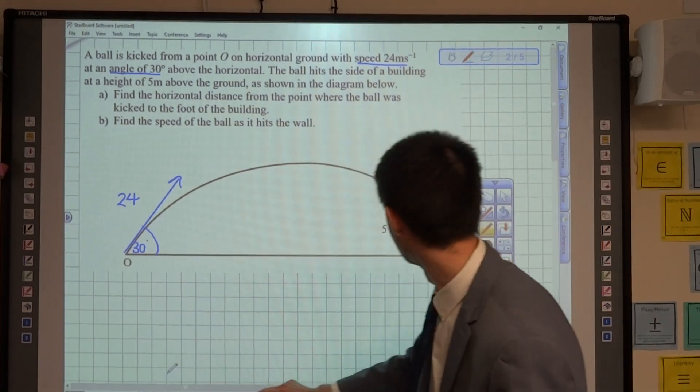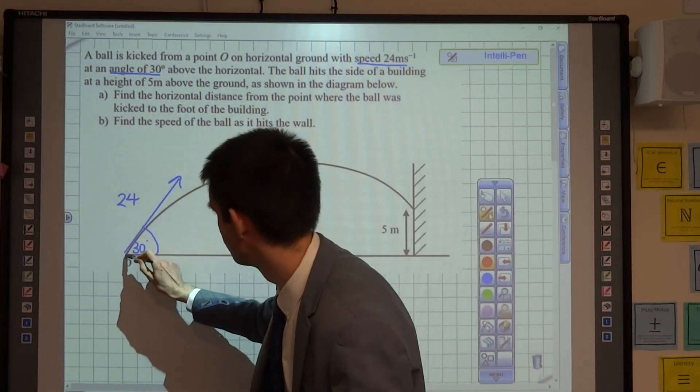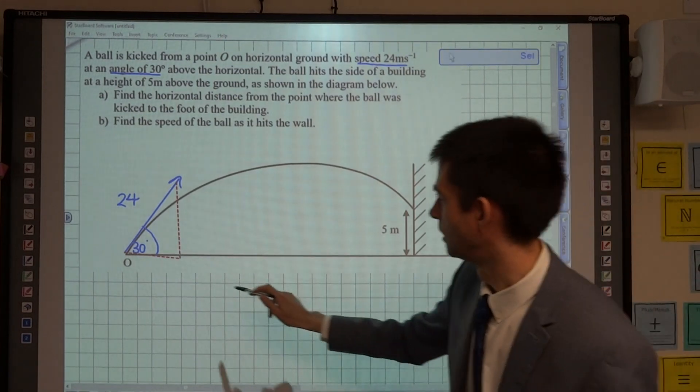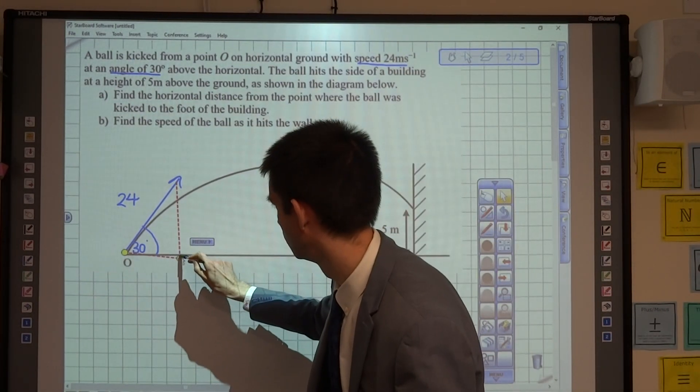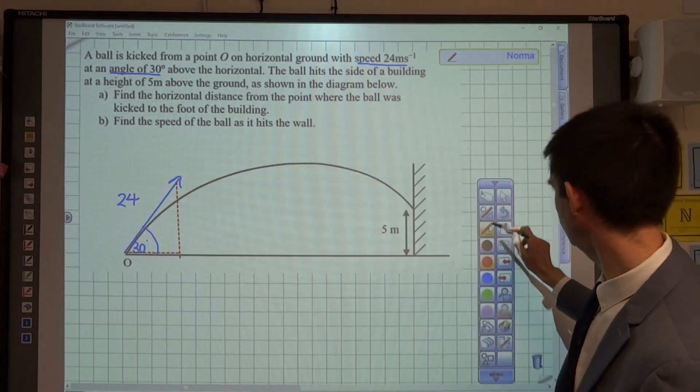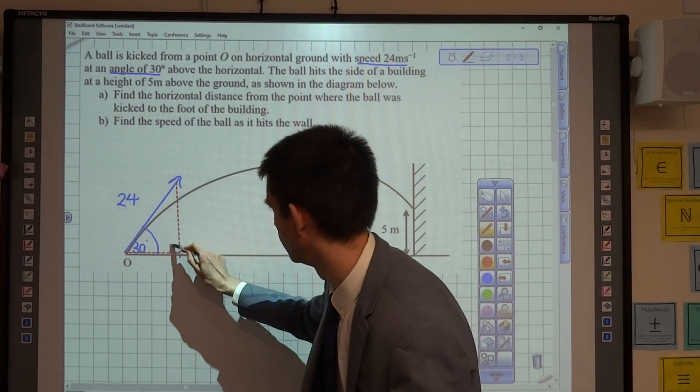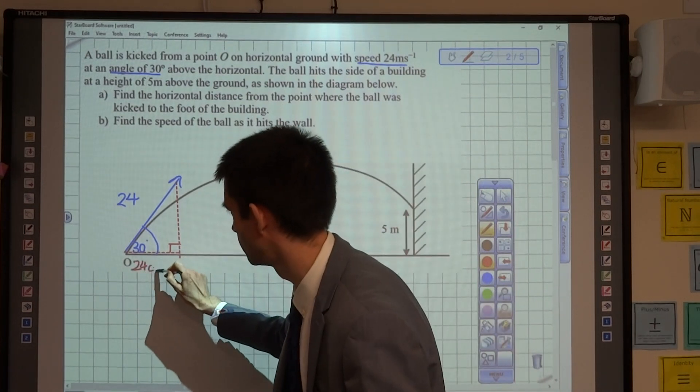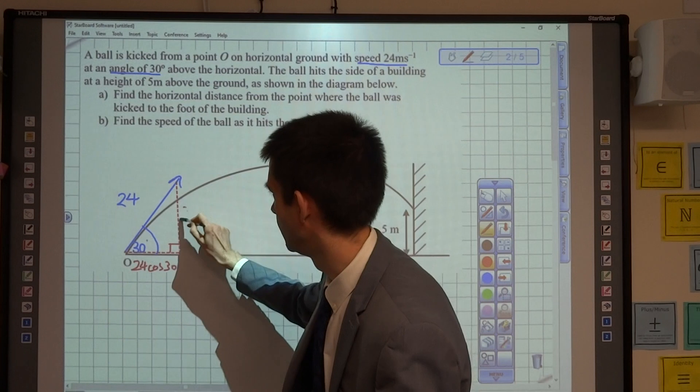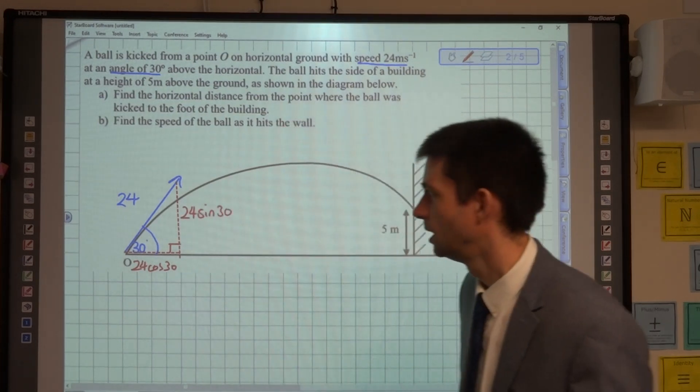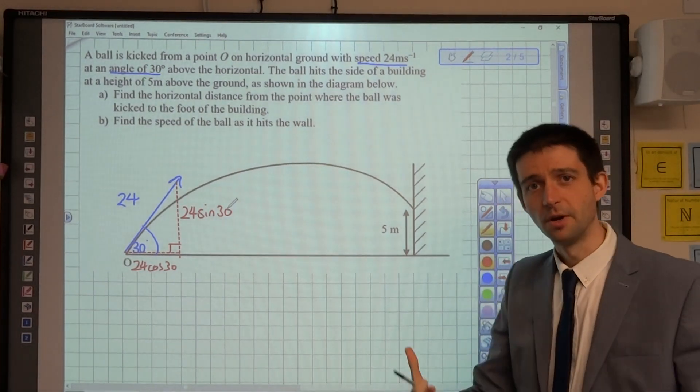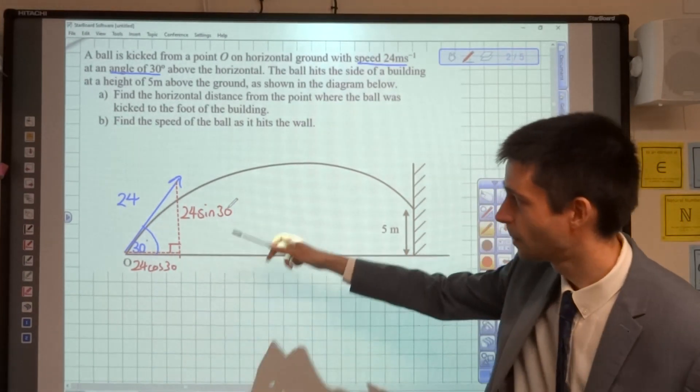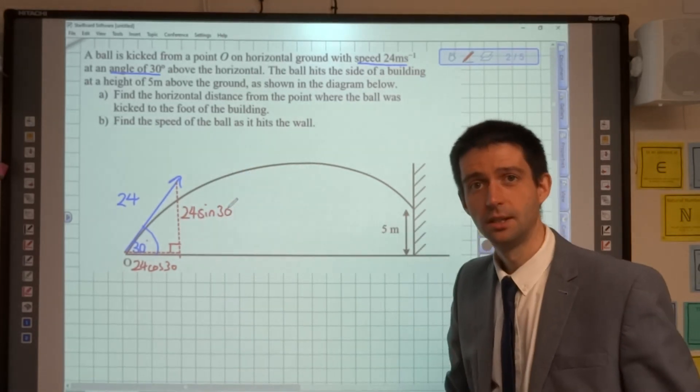I'm just going to crack out some dash lines on the diagram here to show you what I mean by that. So, horizontal component of velocity and vertical component of velocity. Horizontally, this here is going to be 24 cos 30, and vertically, this is going to be 24 sine 30. When I begin to consider my horizontal and vertical components, I'm going to be using 24 cos 30 as my initial speed horizontally and 24 sine 30 as my initial velocity vertically.